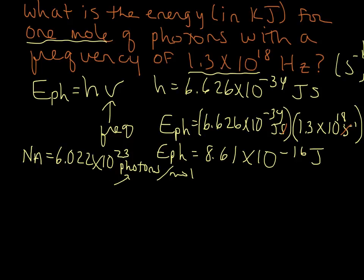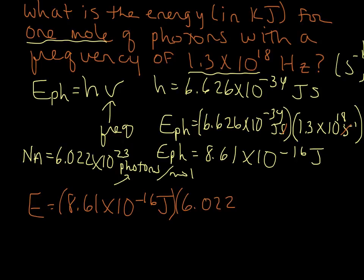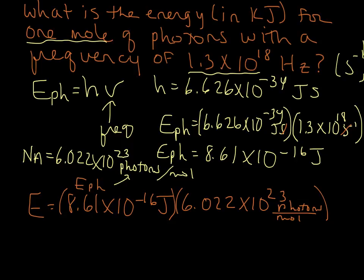So the energy of this one mole of photons with this rather high frequency is going to be 8.61 times 10 to the negative 16 joules, because that's the energy in one photon — let's make that clear by putting in joules per photon. We're going to multiply it by Avogadro's number: 6.022 times 10 to the 23rd photons per mole. Now we're ready to cancel out photons, and we'll end up with joules per mole.